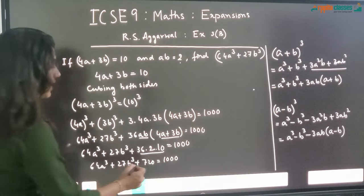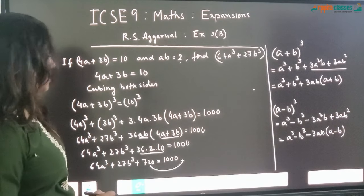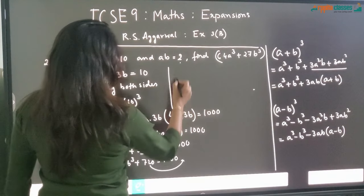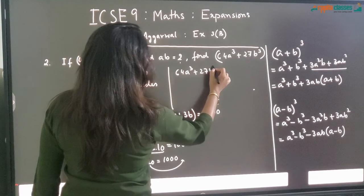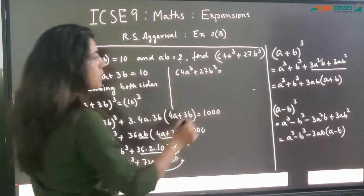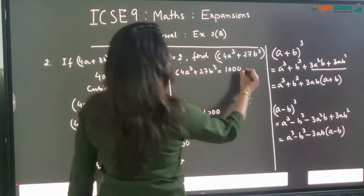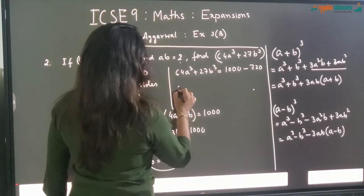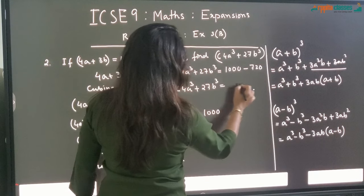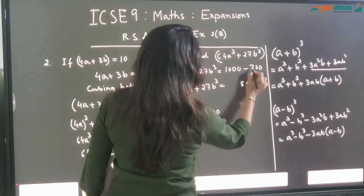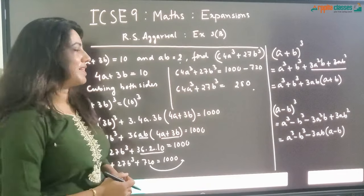Now in the next step, getting 720 to the other side: 64A cube plus 27B cube is equal to 1000 minus 720. So finally I get 64A cube plus 27B cube is equal to 280. So this is the answer for 64A cube plus 27B cube.